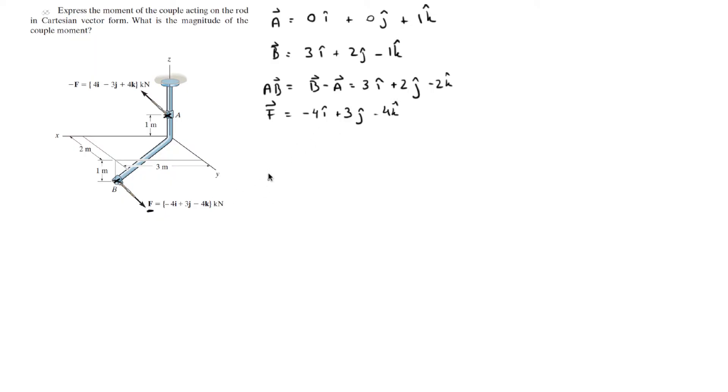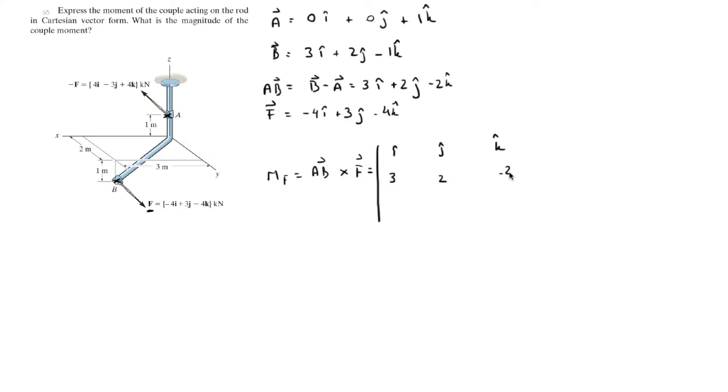With these values we can find the moment of the couple, which equals the cross product AB × F. We build our matrix with I, J, K in the first row, then plug in the values for AB: 3, 2, and -2, and the values for F: -4, 3, and -4.